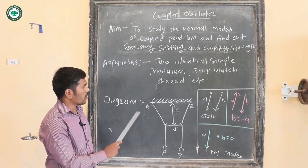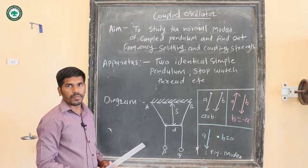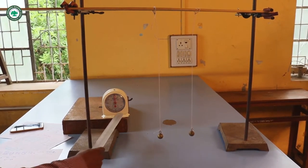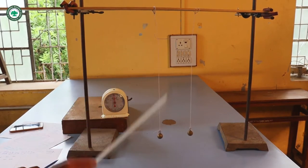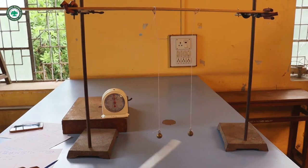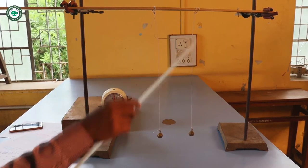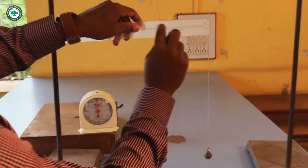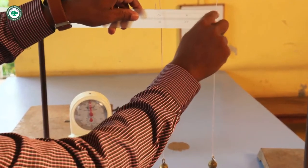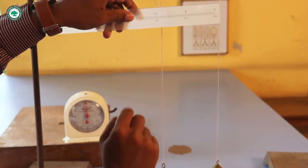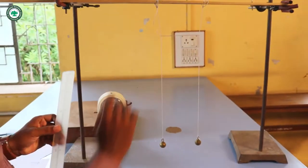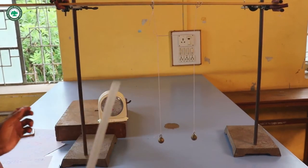This is the setup of the coupled oscillators. We have a stopwatch and two simple pendulums P and Q with identical bobs and identical lengths. The distance D between the two pendulums connected by the thread is 10 centimeters, and the distance S from the rigid support to the thread is 7 centimeters.